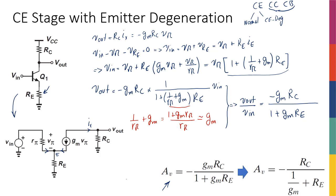Comparing this to the normal common emitter gain of -gm * Rc: adding Re was helpful for biasing, but in terms of gain it's actually bad — it reduces the gain by a factor of (1 + gm * Re). The larger Re is, the more gain is attenuated. So if gain is your primary concern, you probably don't want common emitter with emitter degeneration, because the gain will be much smaller.